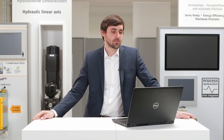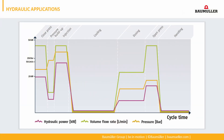Now I'd like to describe a typical cycle of a hydraulic press. The hydraulic power is shown in purple, the flow rate in green and the pressure in yellow. On top you find the segments of the press cycle. The first segment, close press, needs a high flow rate and a medium pressure. This results in medium power.